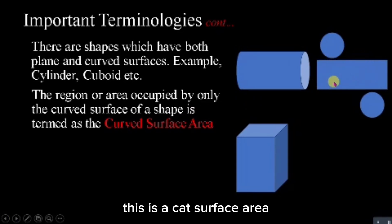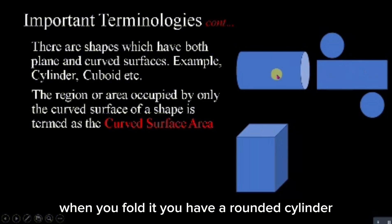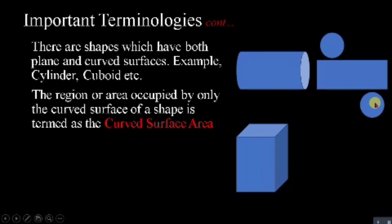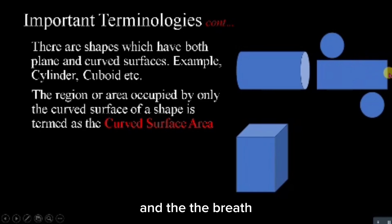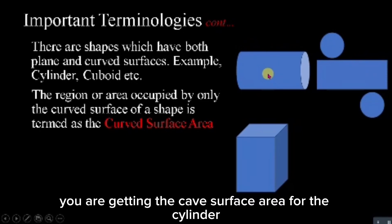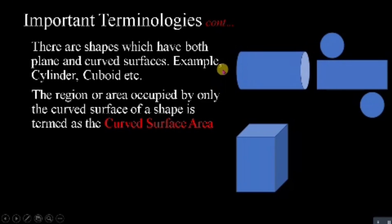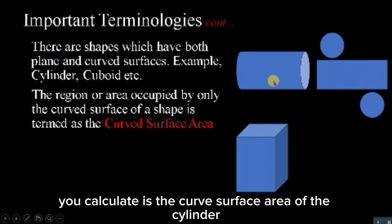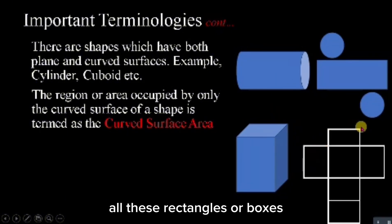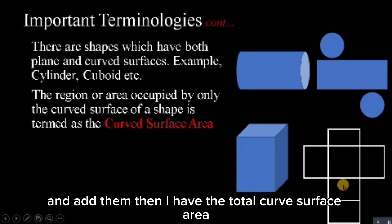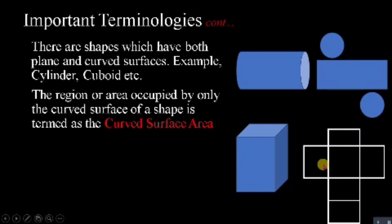When you fold the rectangle, you get a rounded cylinder. The top and bottom are covered by two circles — the lids. When finding the curved surface area, it is the area of the rectangle — length times breadth — excluding the top and bottom circles. That gives you the curved surface area of the cylinder. For the cuboid, when you calculate the area of all the rectangular faces and add them together, you get the total curved surface area.